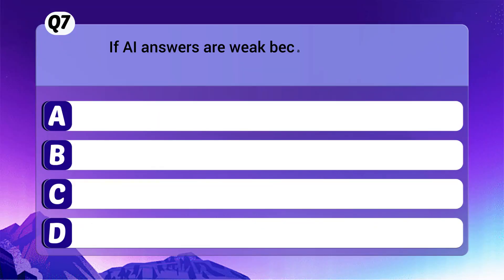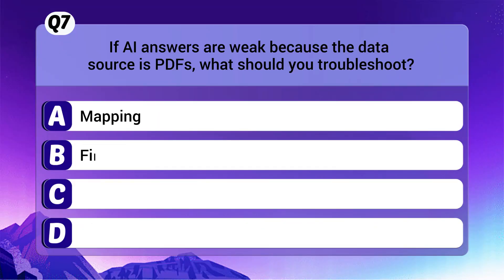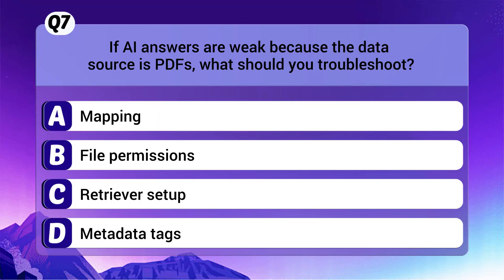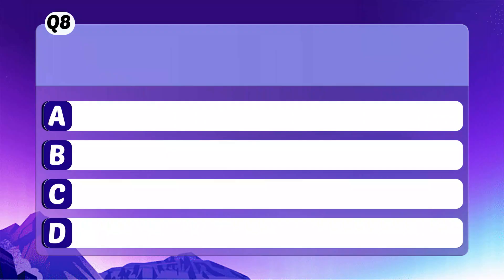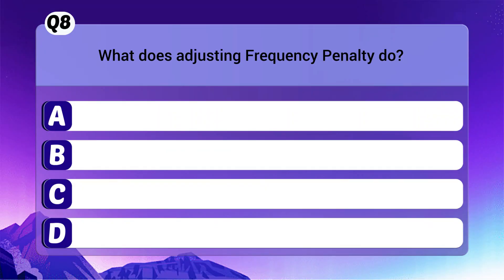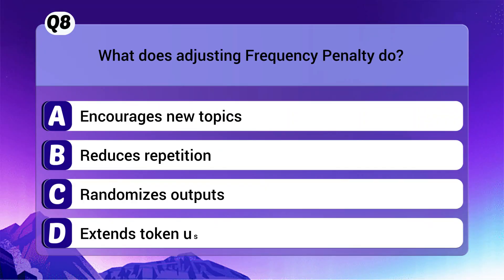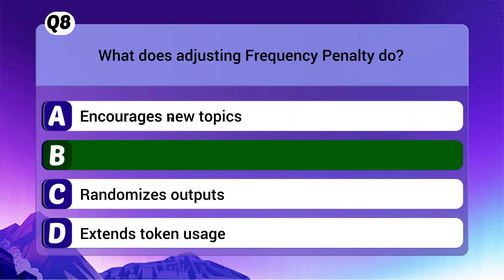Question 7: AI answers are weak because the data source is PDFs — what should you troubleshoot? The correct answer is C: Retriever setup. Question 8: What does adjusting frequency penalty do? The correct answer is B: Reduces repetition.